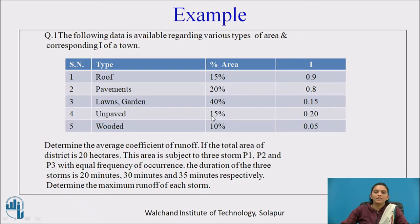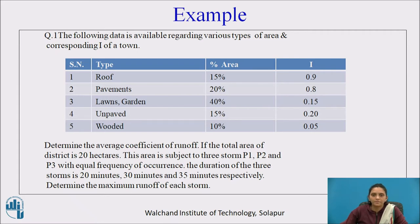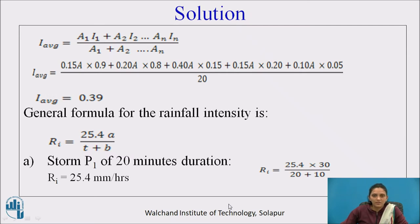Consider a numerical example. The following data is available for various types of area and corresponding impermeability factor of a town: roof (15% of total area), pavement (20%), lawn, unpaved area, and wooded area with respective I values. Determine the average coefficient of runoff. The total area of the district is 20 hectares, subjected to three storms P1, P2, and P3 with equal frequencies of occurrence, having durations of 20 minutes, 30 minutes, and 35 minutes respectively. Determine the maximum runoff for each storm.